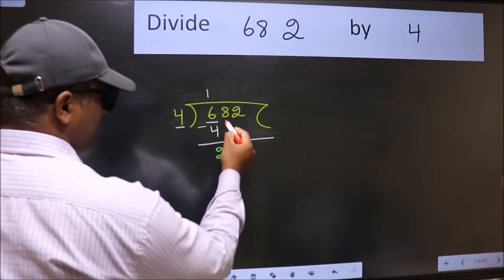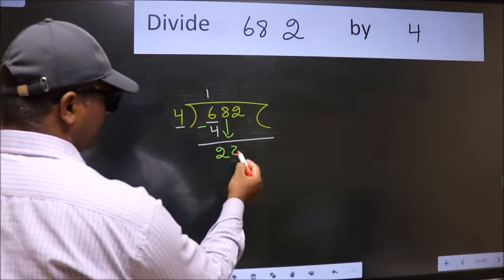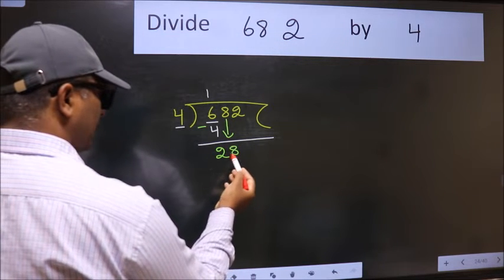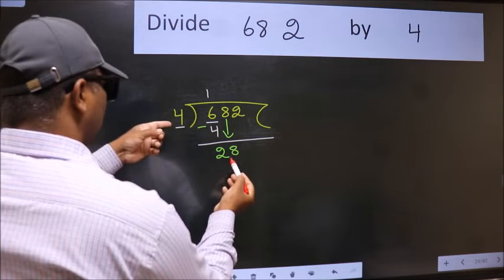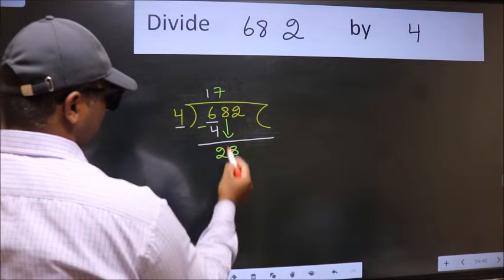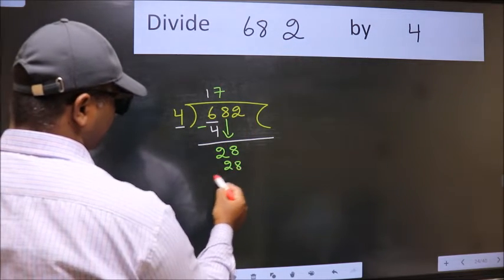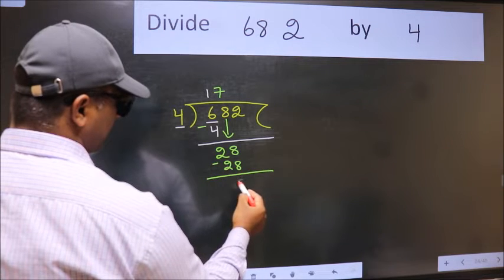After this, bring down the next number. So 8 down. So 28. When do we get 28 in the 4 table? 4 times 7 equals 28. Now we subtract. We get 0.